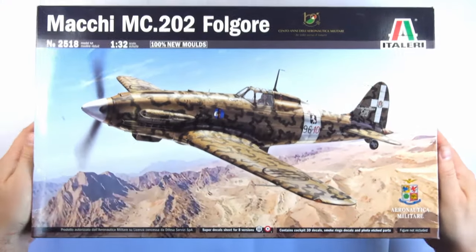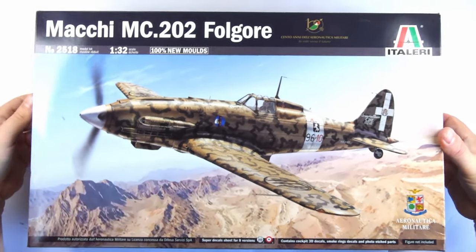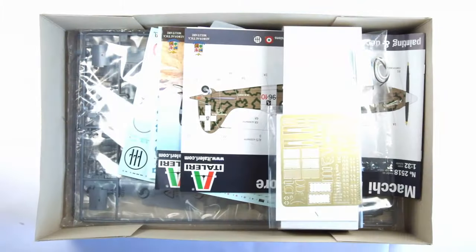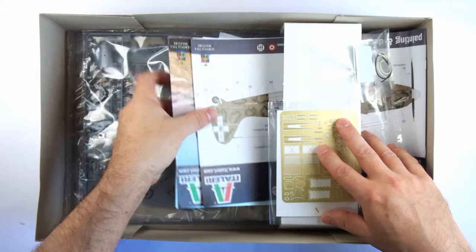The box itself is a large, top opening affair with some attractive art of the aircraft in flight. Inside, the box itself is only about half to two thirds full, even though you're presented with a lot.